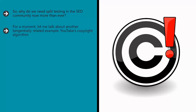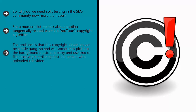For a moment, let me talk about another tangentially related example: YouTube's copyright algorithm. Over on YouTube, there is an algorithm designed to ensure that users don't upload copyrighted content. This prevents YouTube from getting into legal trouble and protects the intellectual property of music labels and movie studios — in theory, anyway. The problem is that this copyright detection can be a little gung-ho and will sometimes pick out the background music at a party and use that to file a copyright strike against the person who uploaded the video.